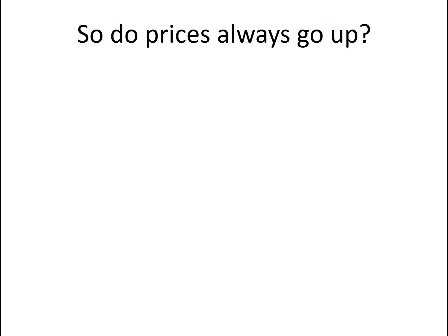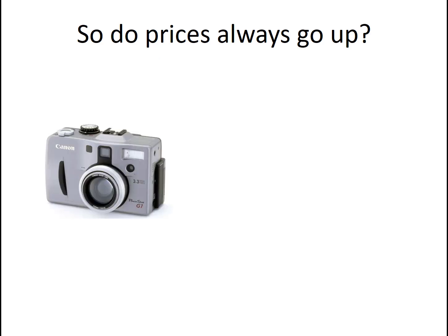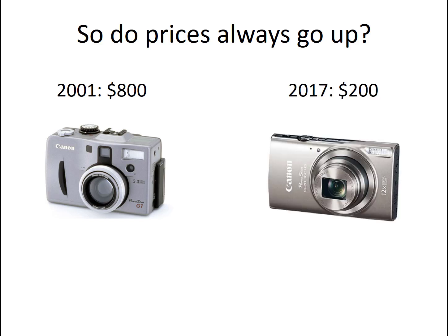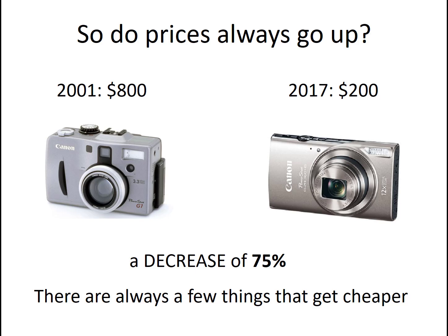So do prices always go up? Well, no, of course they don't. Here's a picture of a digital camera. It might look a bit elderly — that's because it is. It's from 2001. It was priced at $800 in the US. The equivalent model today, the price has actually come down to $200, representing a decrease in price of 75%. There are always a few things that get cheaper, but we tend not to call that deflation because the vast majority of stuff goes up. Particular lines such as this digital camera come down in price because of technological changes.